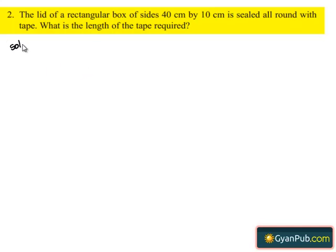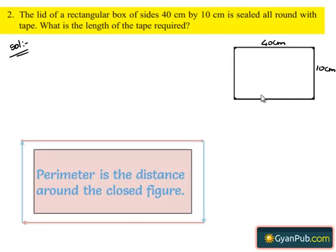Let's do the solution. Given the lid is in the rectangular shape, so first consider a rectangle. Here is the rectangle. Let us denote the length with 40 cm and breadth with 10 cm. Given to find the length of the tape required to seal the box all around, which is nothing but finding the perimeter of the rectangle.